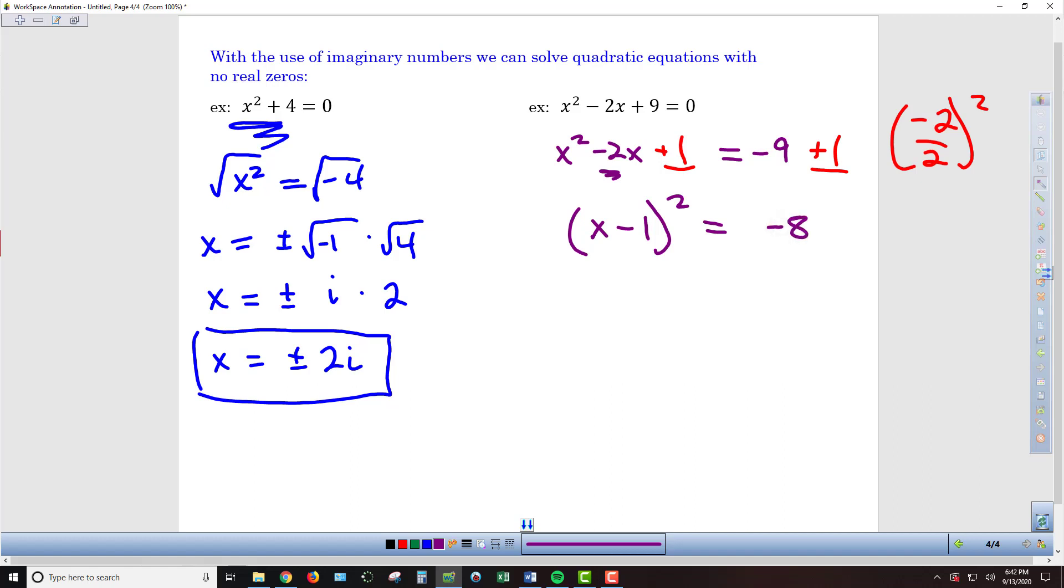Now we're at the point where we can use our square roots one more time. So I can take the square root of both sides. I'm left with x - 1 over here on the left equals, and then I've got plus or minus, and then again, I'm going to separate the √-1 from the 8.